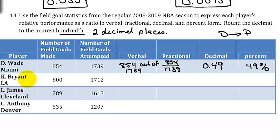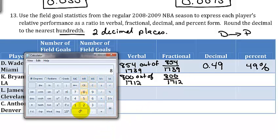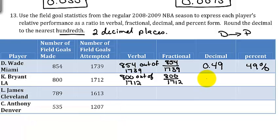For Bryant from L.A., that would be 800 out of 1,712. The fraction form would be 800 over 1,712. Then doing the decimal, take 800 and divide by 1,712. We want it rounded to two decimal places. I have 0.467, so I have to round the 6 up to a 7 because this number following the 6 is bigger than 5. So 0.47, and that would be 47%.